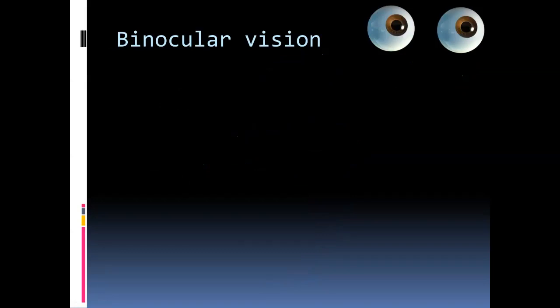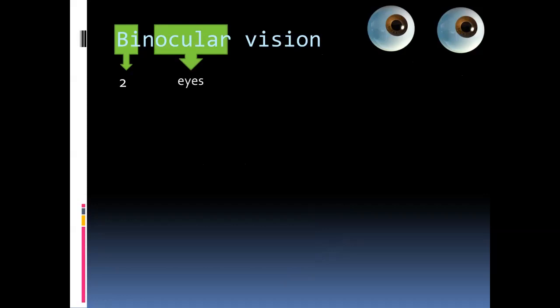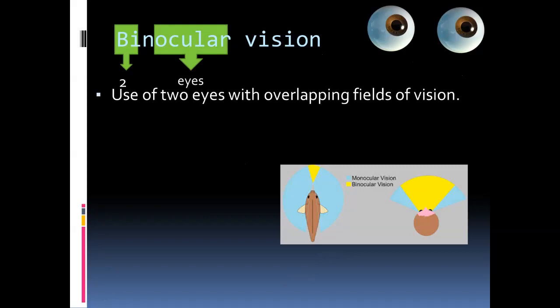Binocular vision — if you look at the word, the prefix 'bi' refers to the number two and 'ocular' refers to eyes. So binocular vision is when we have vision of an object using both eyes at the same time. If you look at this fish, the right eye covers vision from one side all the way across, and the left eye has a similar region on the left-hand side. But this yellow portion in the front — that's the portion where both eyes are looking at the same time. That's what we call binocular vision.